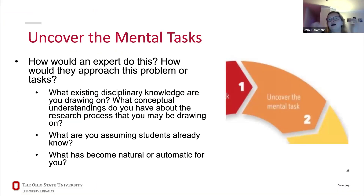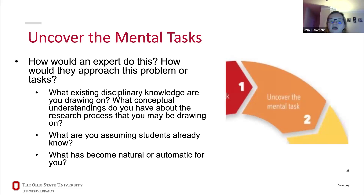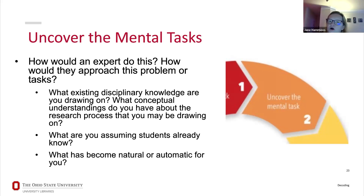The second step of the decoding the disciplines process is to think carefully about the mental tasks behind those bottlenecks. If the challenge is that students can't develop a good research question, we start thinking: how do experts develop their research question? What steps does an expert take? If students aren't citing their sources, how do experts in the field cite sources? What kinds of knowledge are you drawing on that allow you to do this process? What are the things you know as an expert that allow you to be successful at this task?